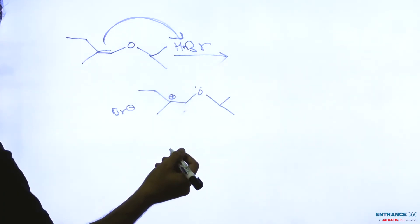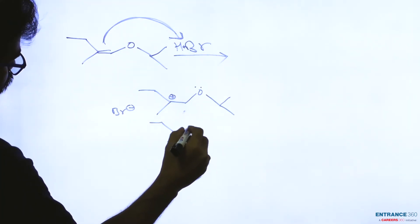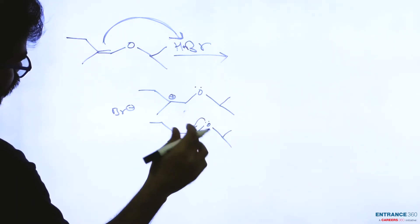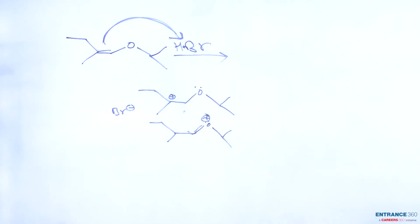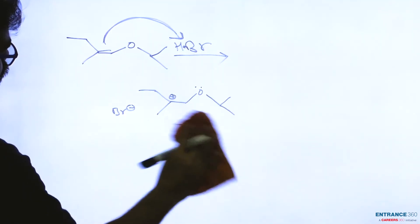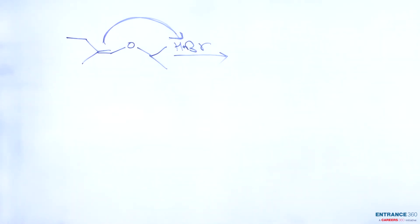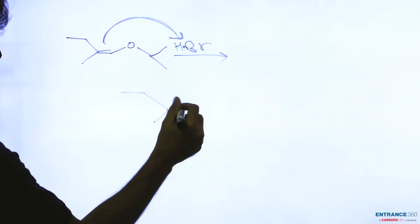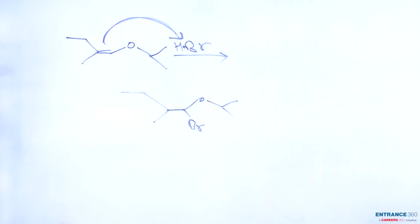The carbocation will form like this, so the stability of the carbocation will be higher at this position. HBr will attack here, so our product is this. Now we have to find the total number of optically active products.